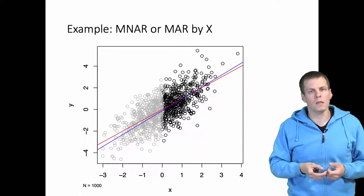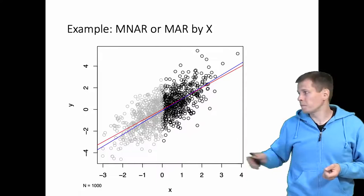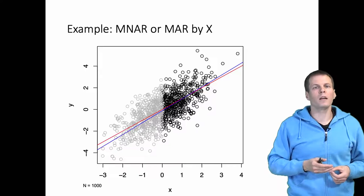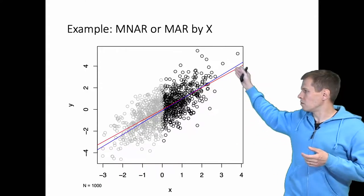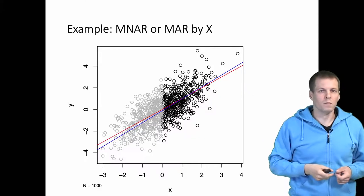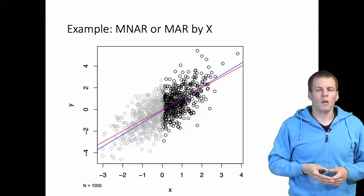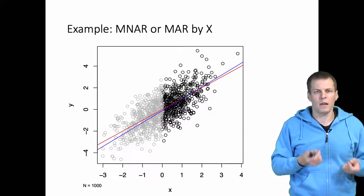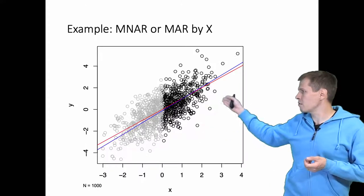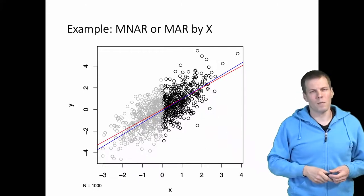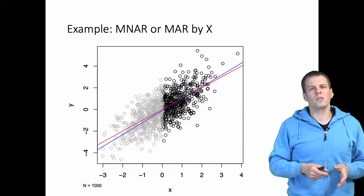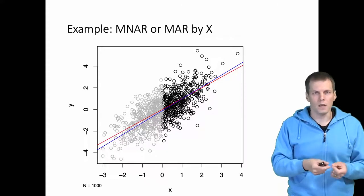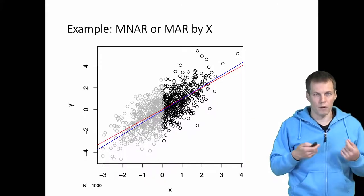We can see that the consequences of dropping cases where x is less than 0 are not that severe. The estimated regression line — the blue line — is still approximately correct. What we lose is precision: the red and blue lines are not as well aligned as before, but with 500 observations remaining it is probably not a big problem. So dropping based on x values causes inefficiency but does not cause inconsistency or bias in regression analysis.